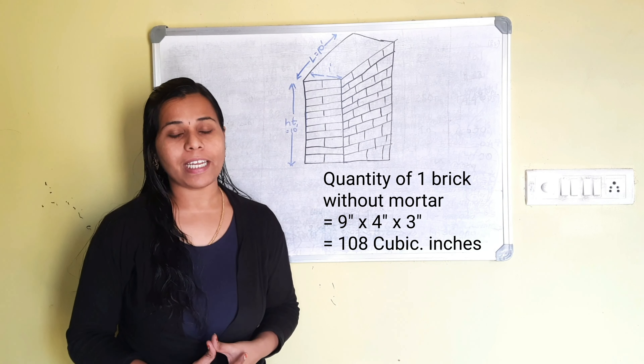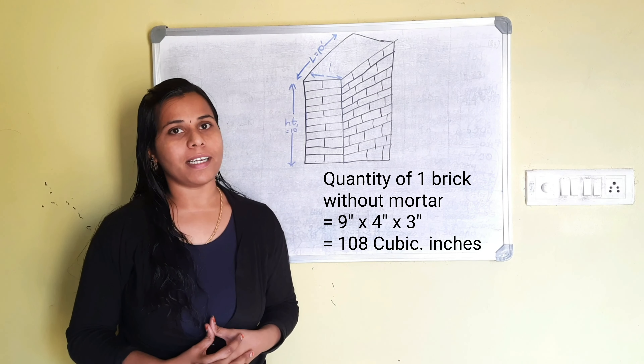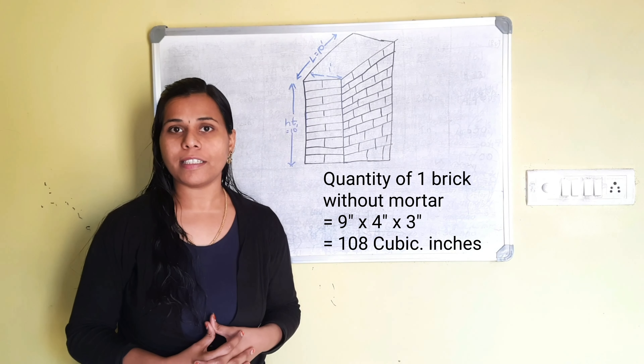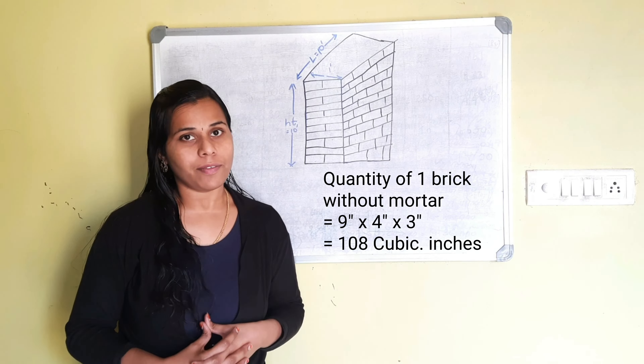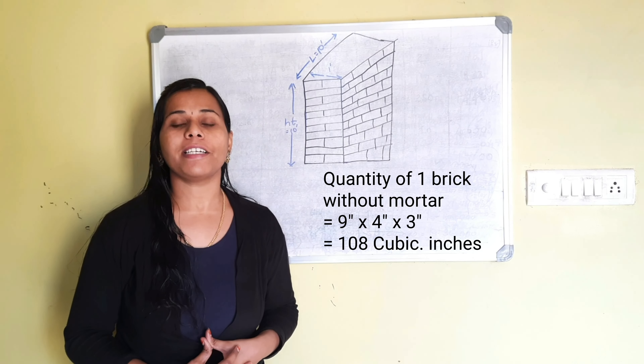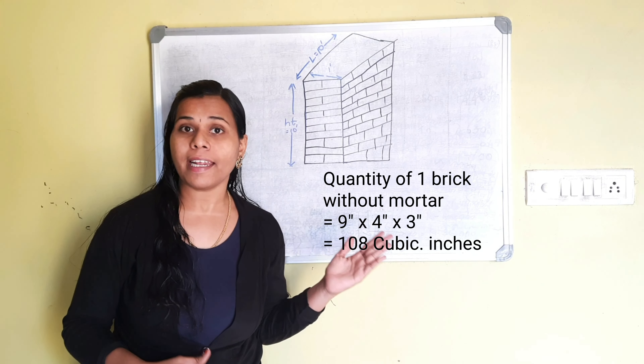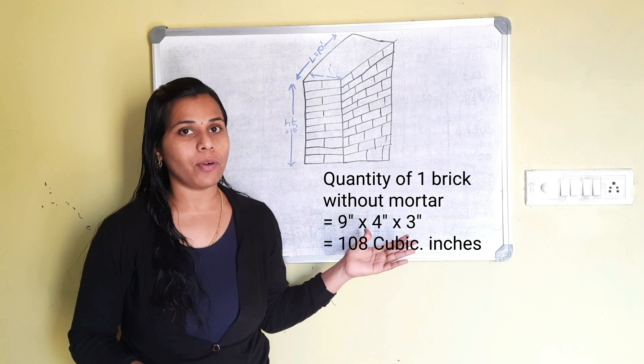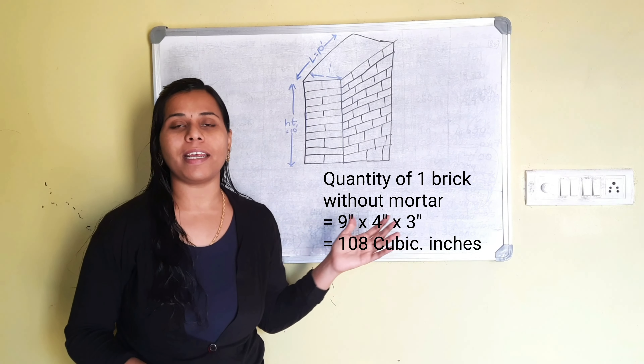The quantity of one brick without mortar is very easy to calculate. We simply multiply 9 inches into 4 inches into 3 inches.